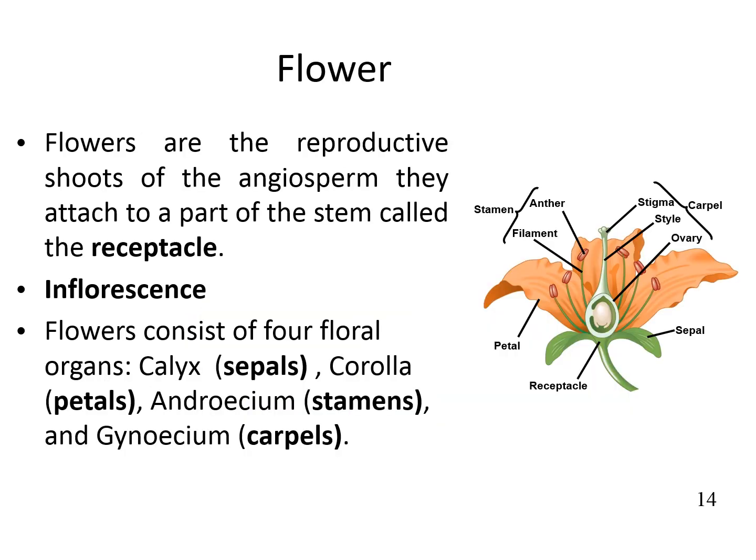Flowers are the reproductive part of the plant. They attach to the plant at the stem part called the receptacle. The arrangement of flowers on the floral axis is called inflorescence. The flower consists of four different types of whorls: calyx, the outermost part; corolla, composed of petals; androecium, composed of stamens; and gynoecium, composed of carpels.